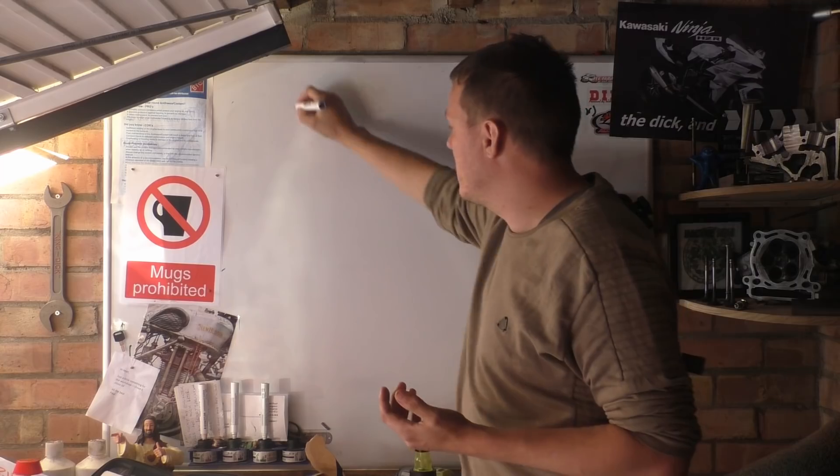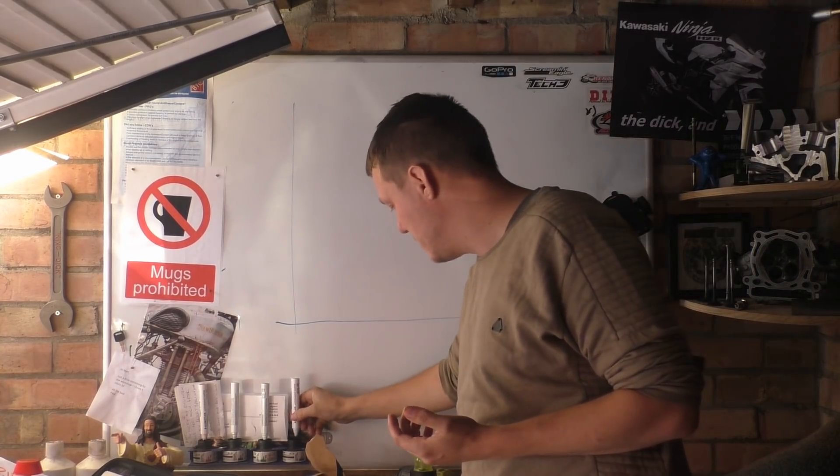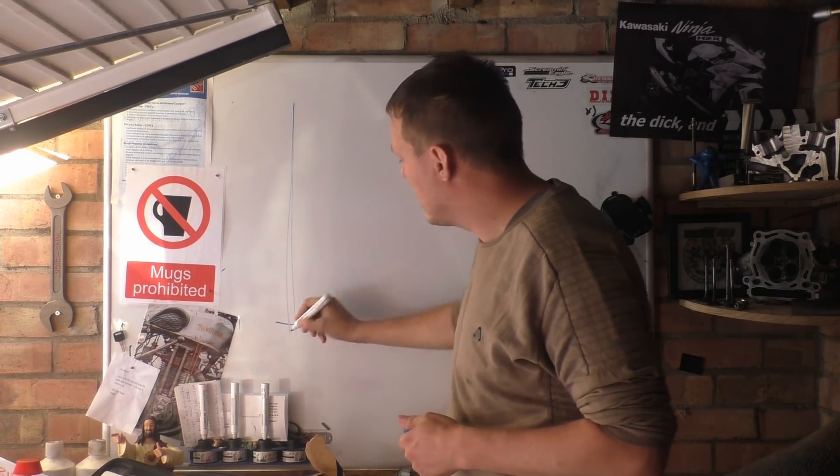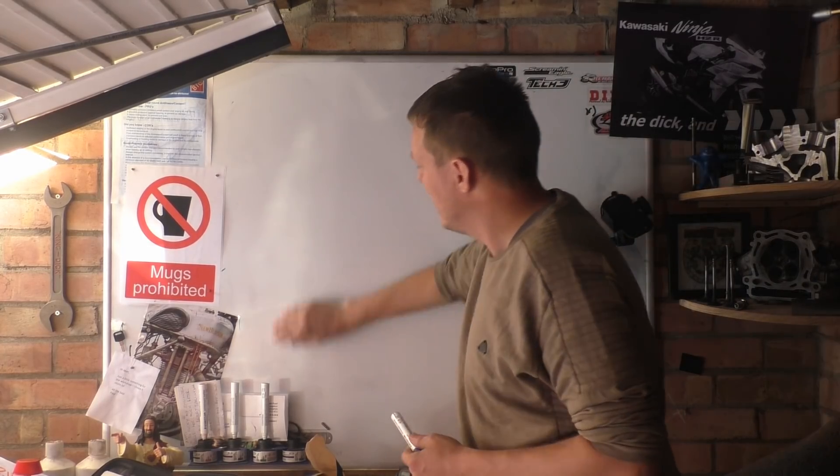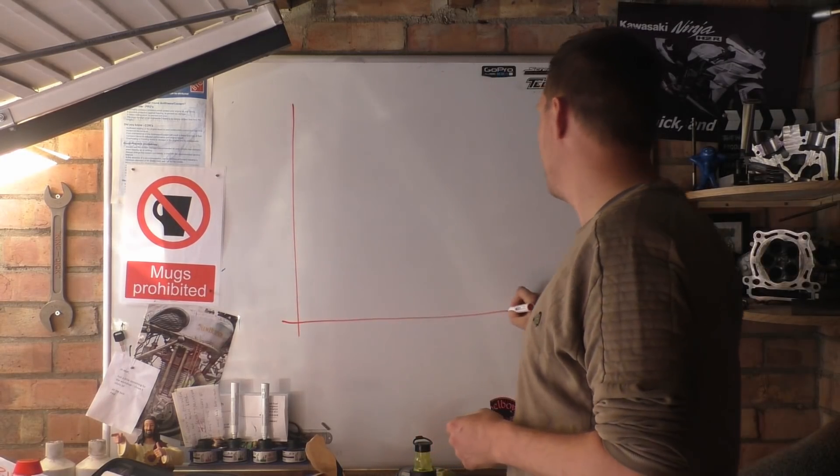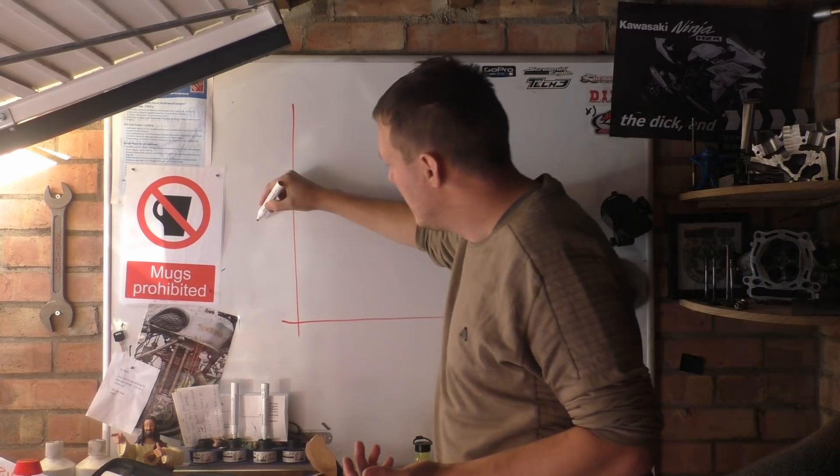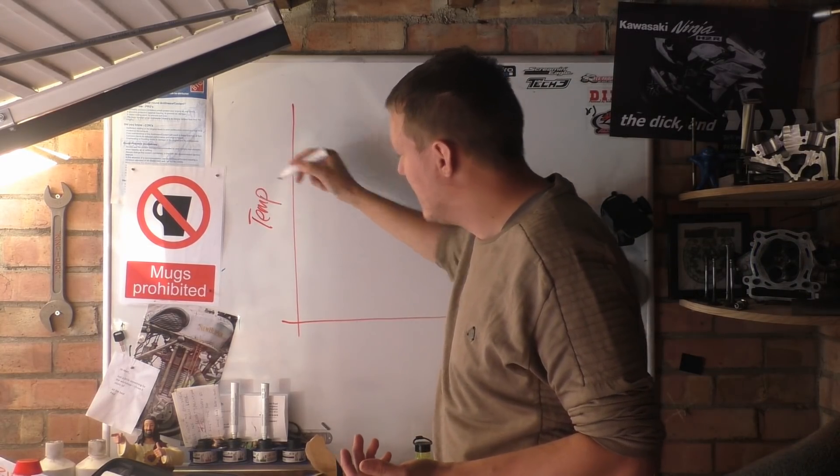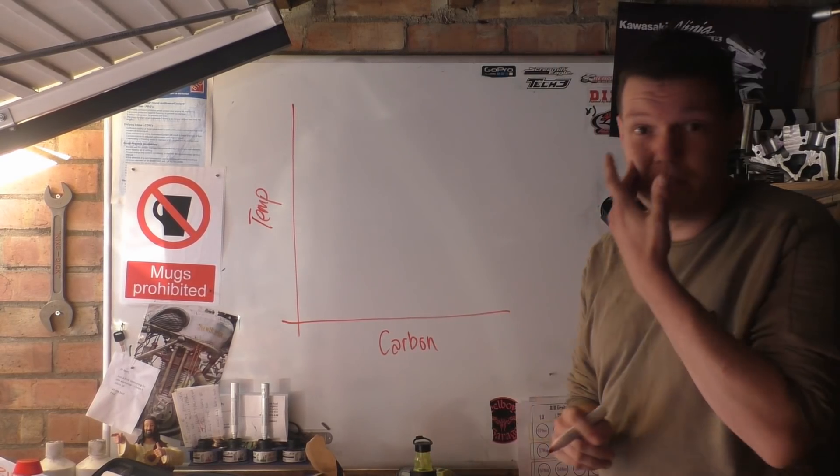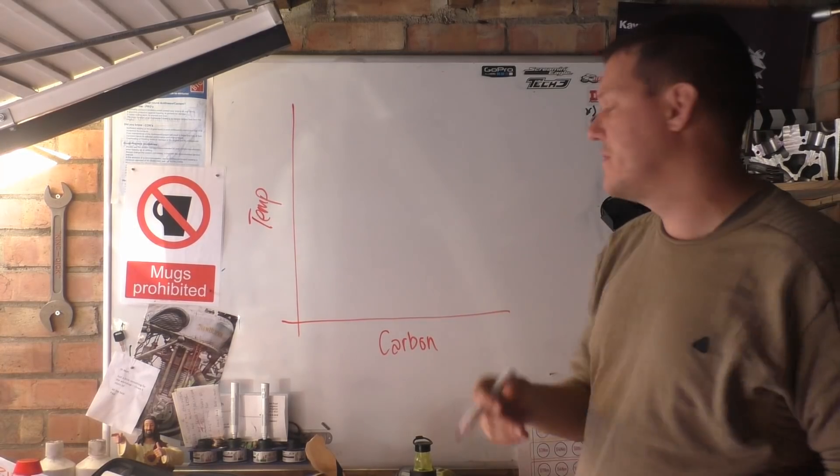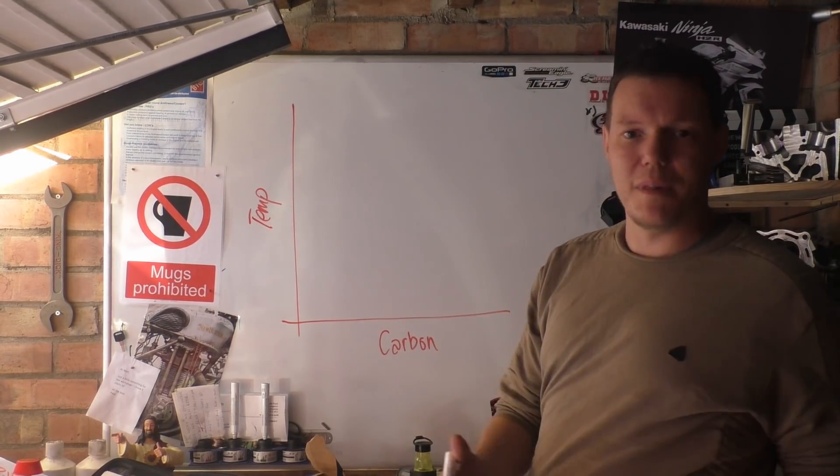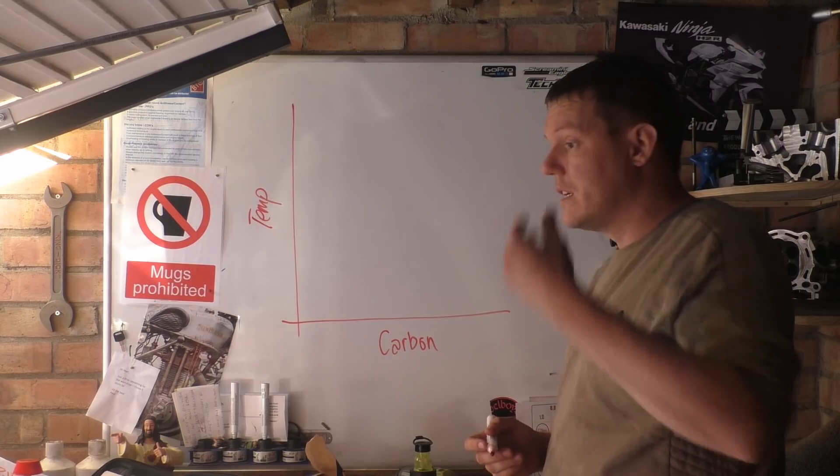You have a carbon iron diagram, so you have temperature up here and you have carbon content here. Now I will do an entire video, a couple of videos on the iron carbon phase diagram because there's a lot to it - pearlite, cementite, martensitic, austenitic, blah blah blah.